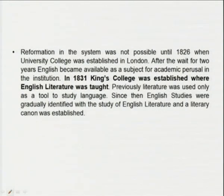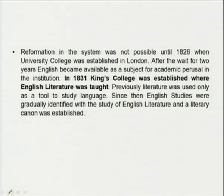Literature was seen as a replacement for religion, which had lost its ground in the changing age of science and cynicism. Reformation in the system was not possible until 1826, when University College was established in London. After a wait of two years, English became available as a subject for academic study. It was only as late as 1826–1828. In 1831, King's College was established, where English literature was taught. Previously, literature was used only as a tool to study language. From then onwards, English studies were gradually identified with the study of English literature, and a literary canon was established.